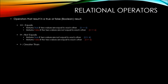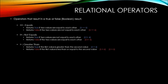The greater than relational operator returns true if the first value is greater than the second value — so 5 is greater than 4 would return true. Conversely, it would return false if the first value is less than or equal to the second value, so 5 greater than 6 would return false.